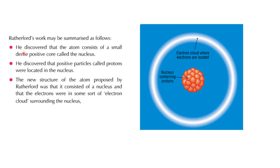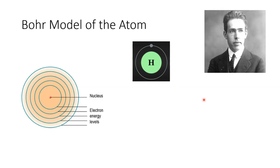Based on all the work carried out by Rutherford and his team, his work can be summarized as: he discovered the atom consists of a small, dense, positive core called a nucleus; he discovered that positive particles called protons are located inside the nucleus; and he proposed a new structure of the atom consisting of a nucleus with electrons in some sort of electron cloud surrounding the nucleus. You have your electron cloud where electrons are located, and then the small dense core — the nucleus — containing protons. The majority of the atomic structure is just empty space.